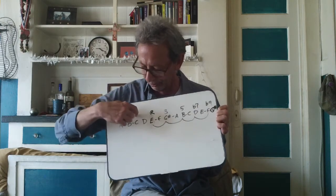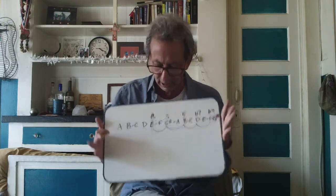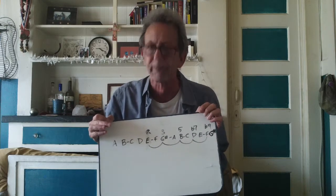The scale of thirds has to be in two octaves because root, third, fifth, seventh — you've already crossed the octave. What they call a sixth in the scale of seconds, in the scale of thirds you would call a thirteenth. The scale of thirds is called such because you're jumping in thirds: root, third, fifth, seventh, ninth, eleventh, thirteenth. When you have a fourth in the scale of seconds, in the scale of thirds that's the eleventh; and the sixth in the scale of seconds is the thirteenth in the scale of thirds.